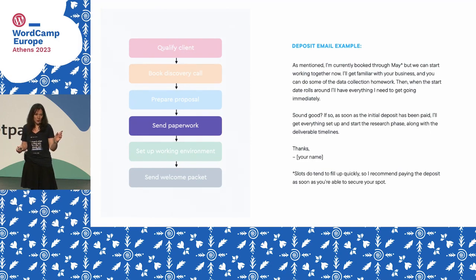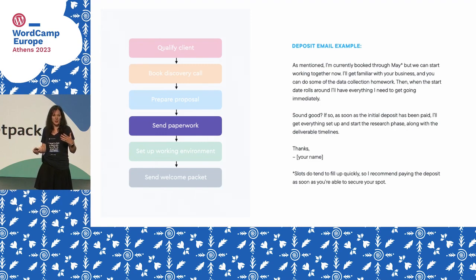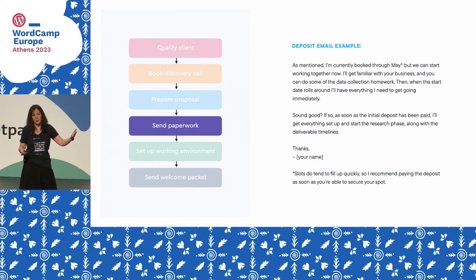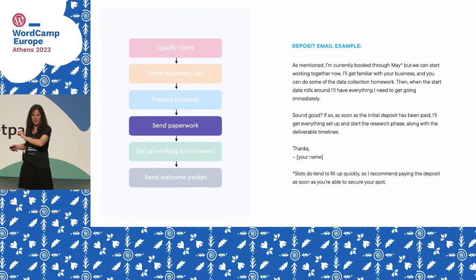If your proposal has an expiration date, you can send a couple of follow-up emails building up to that deadline to create a little urgency — mentioning that other people are waiting and their spot will go if they don't pay soon.